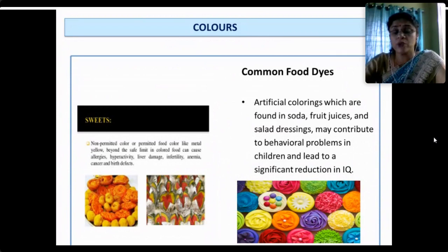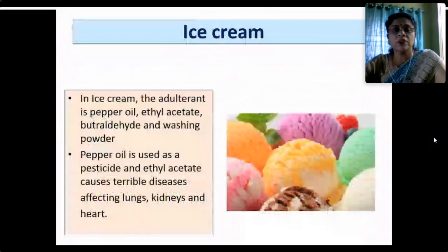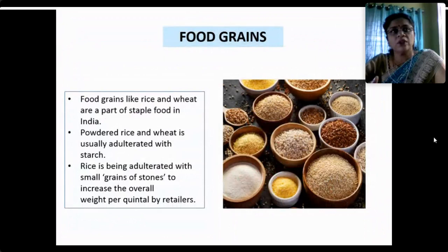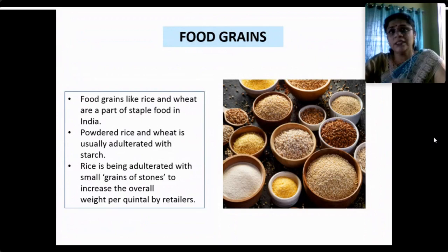Non-permitted colors and dyes used in sweets may lead to infertility, anemia, cancer and birth defects. Artificial colorings found in soda, fruit juices, bakery foods and chocolates attract children greatly. Behavioral problems arise in children consuming artificial coloring matter, and it can even lead to a significant reduction in their IQ. Ice cream is adulterated with piperonyl, ethyl acetate and washing powder, causing terrible diseases affecting the lungs, kidneys and heart.